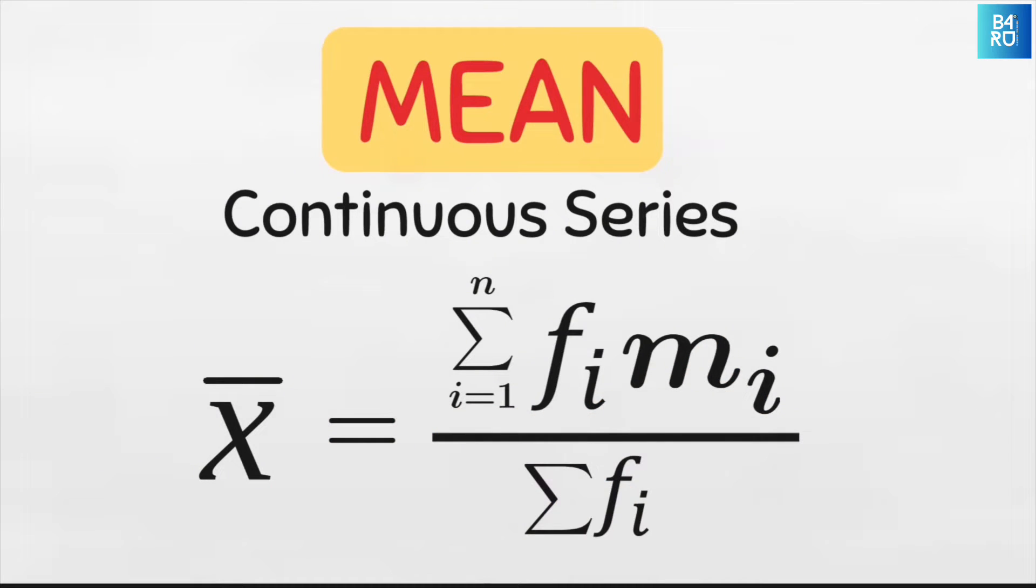This means the sum of the product of each frequency and each midpoint from the first class to the last class all divided by the sum of all the frequencies which is the same as the number of values.